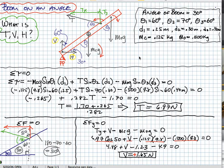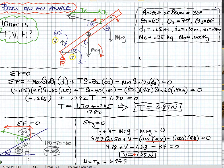Lastly, the horizontal force. The sum of the horizontal forces equals zero, and there are only two forces, so H equals Tx. Now Tx is 6.97 times sine of 50 degrees. Crunching the numbers, we get 5.34 Newtons.